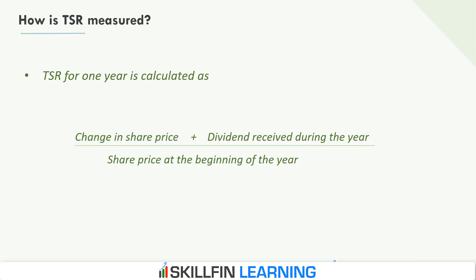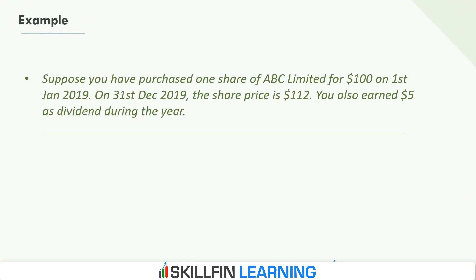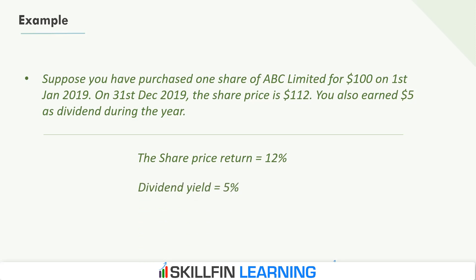Let us understand this with the help of a simple example. Suppose you have purchased shares of ABC Limited for $100 on 1st January 2019. On 31st December the share price is $112. During the year you also earned $5 as dividends. In this case the share price appreciation is $12 which is 12%, and therefore the total shareholder return is 17%.